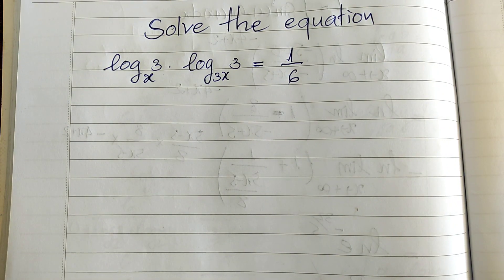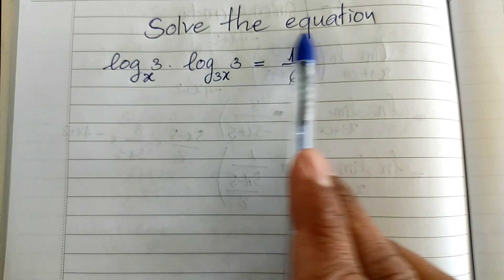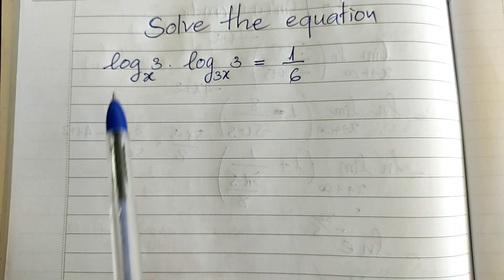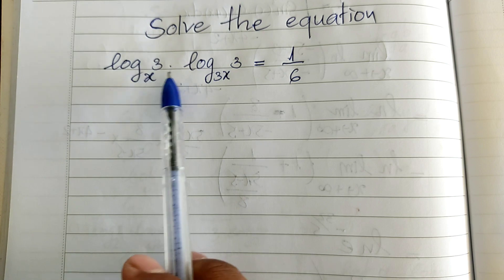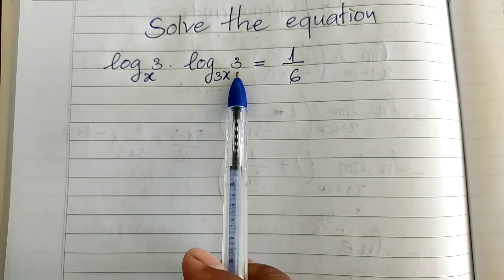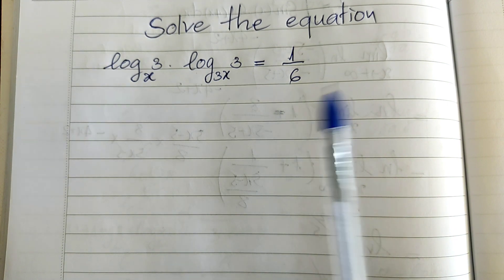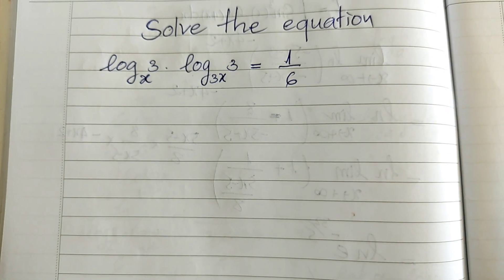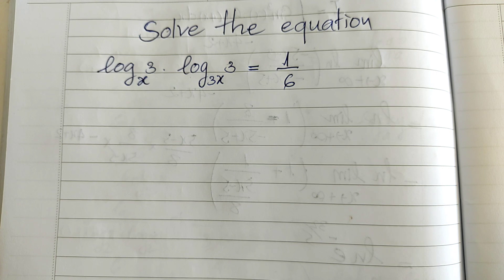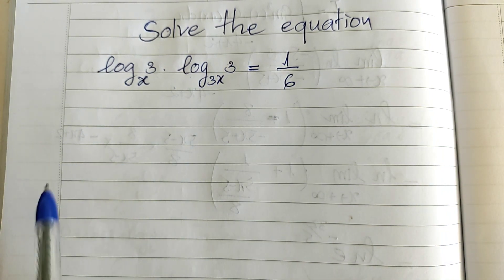Hello everyone, welcome to my YouTube channel. Today I have one exercise on paper. The equation is: log base 6h of 3, multiplied by log base 6 of 3h of 3, equals 1 divided by 6. Do you know how to solve this? If you know, please do it, then come back to watch my video from beginning to end to verify your solution. Before we go to the solution, please don't forget to subscribe to my channel for more exciting videos. Now let's go to the solution together.